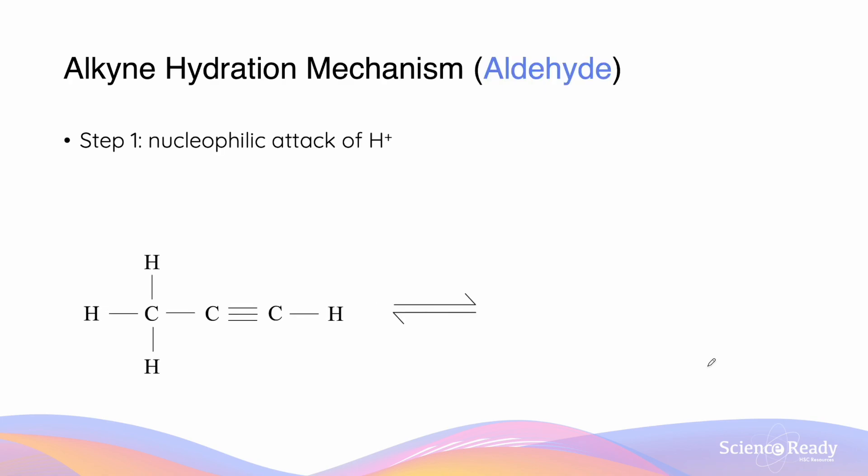Now let's look at the formation of an aldehyde as a result of alkyne hydration. We revisit step one to see what is the case for the formation of the aldehyde. And step one really occurs in the same way in that the electron-dense triple bond engages the nucleophilic attack of the H+. This is very similar to what we saw in step one for the hydration mechanism that forms a ketone and then it ends up forming a carbocation intermediate.